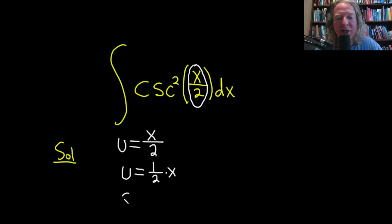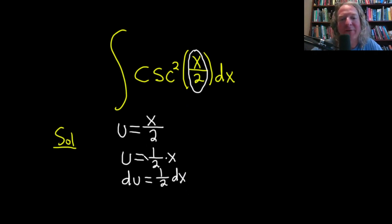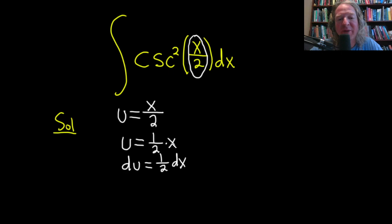Now when you differentiate du, it's the derivative of u, which is just 1. Derivative of x is 1, so we just get 1 half dx. So much easier to think about it for most people by performing this little first step here.